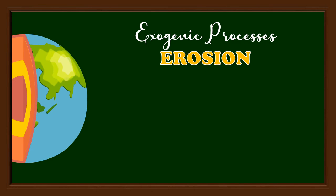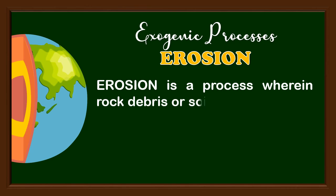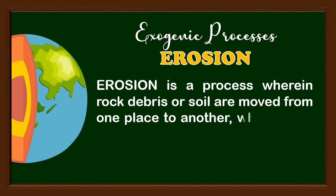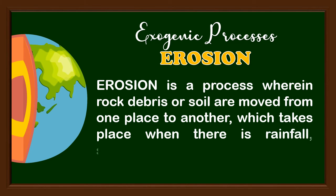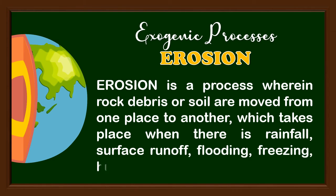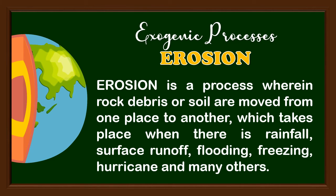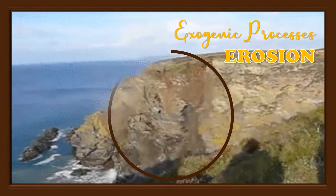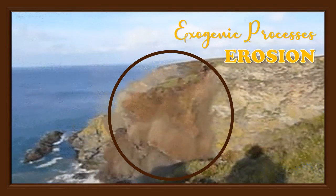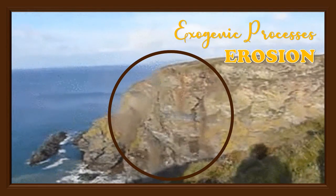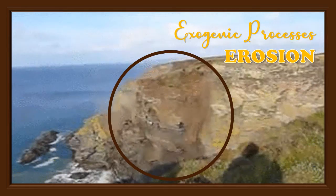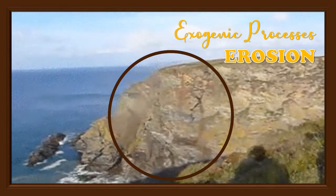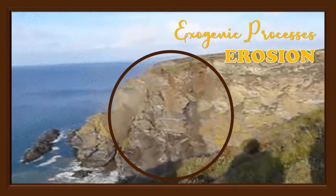The second type of exogenic process is erosion. Erosion is a process wherein rock debris or soil are moved from one place to another, which takes place when there is rainfall, surface runoff, flooding, freezing, hurricanes, and many others. Because of different agents of weathering like water and wind, the bonds between rocks and soil disintegrate, causing them to collapse. These rocks then turn into fragments or sediments and will soon be deposited in the ocean bed.